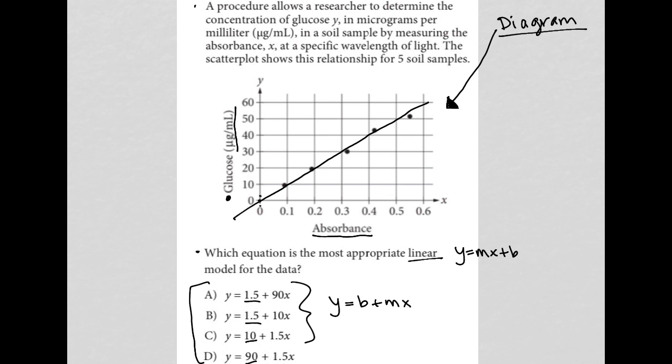So my options for Y-intercept are 1.5, 10, and 90. Given those three options, I'm going to say 1.5 is best because my line I'm sure is not perfect, but I don't think it's going to be 10, and I definitely don't think I'm so far off that it would be 90. In fact, I know that it's not 90. I know that it's not 10.